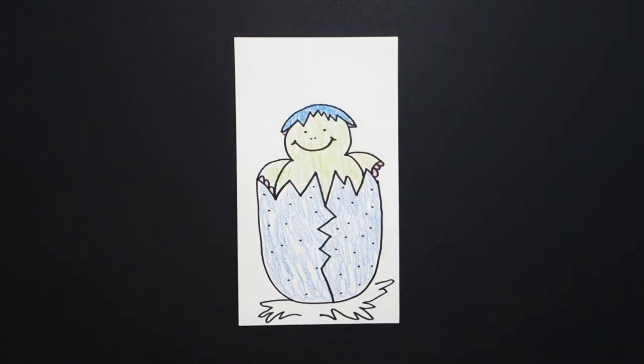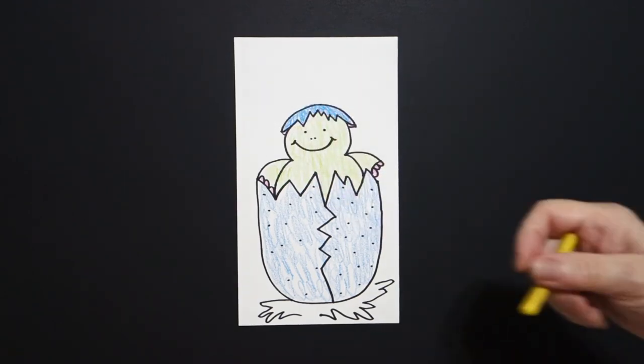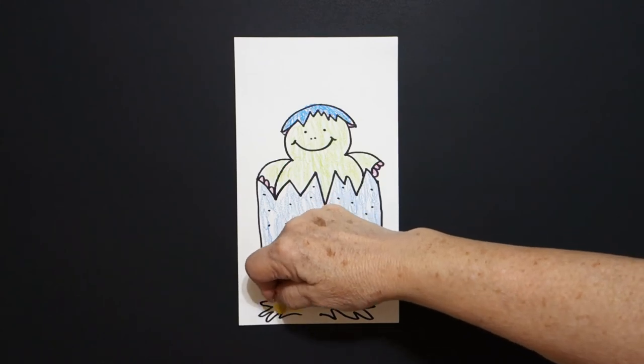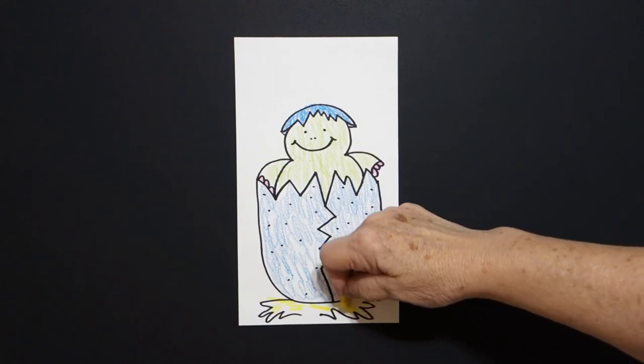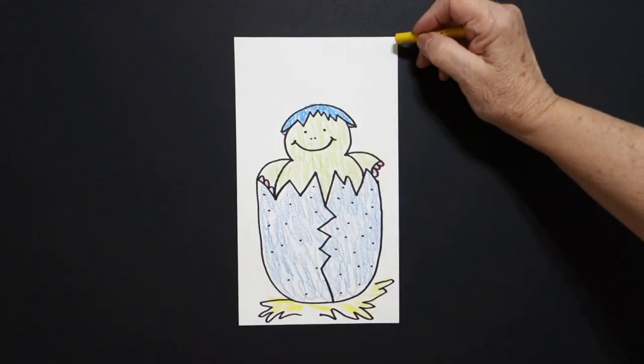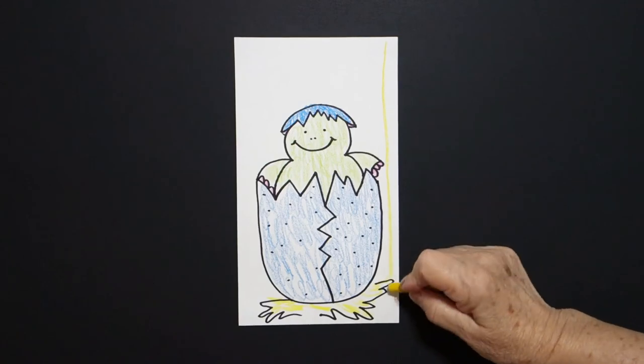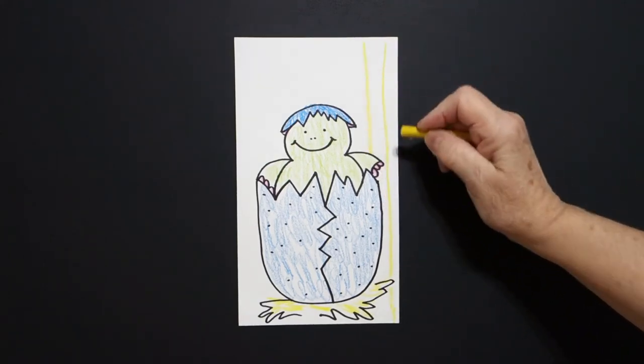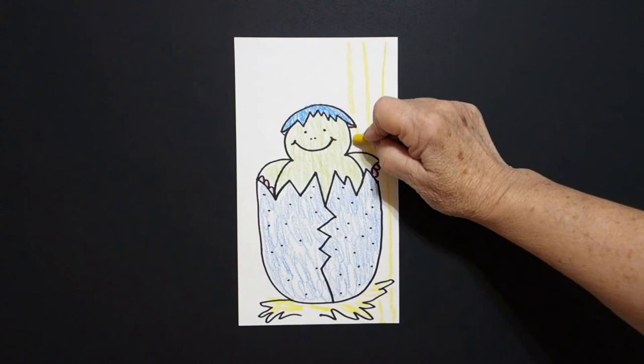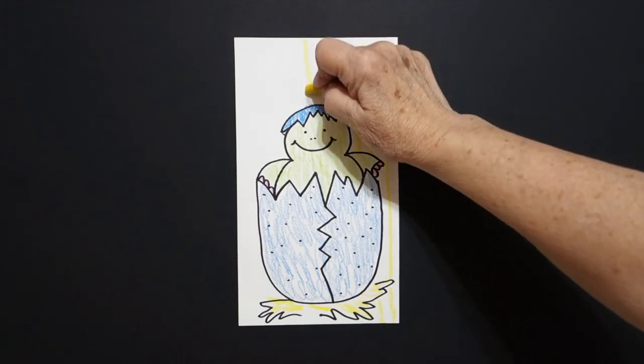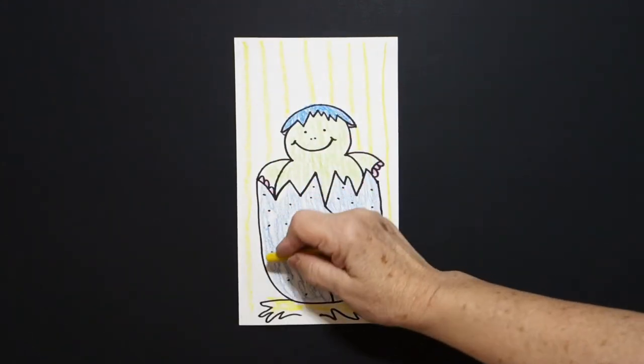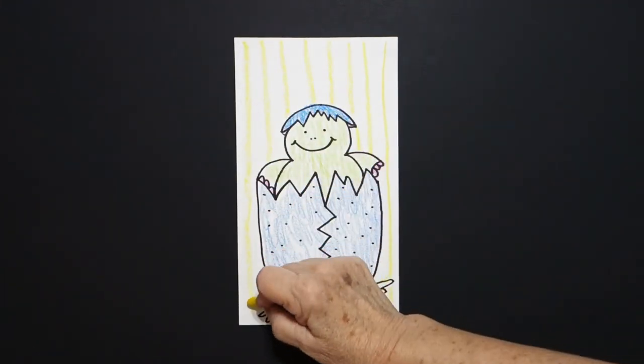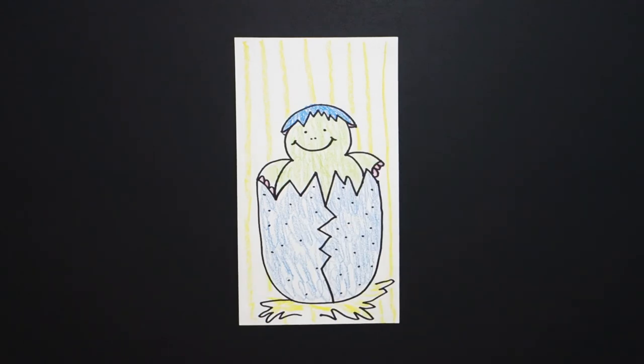The last thing I'm going to do is take my yellow and color this down here at the bottom. This whole space and finally take my yellow and just draw some yellow straight lines in the background. Now some of you might want to take a little extra time and draw your own background which could be just about anything. All right let's see what this looks like all colored in.